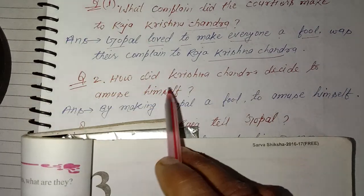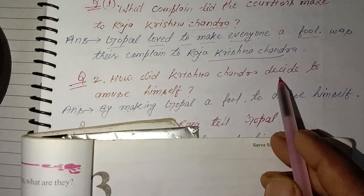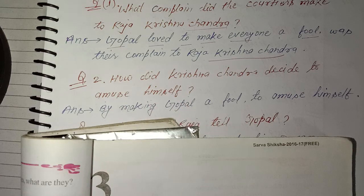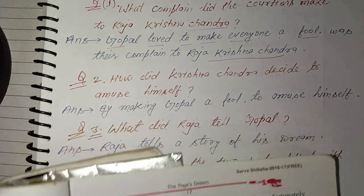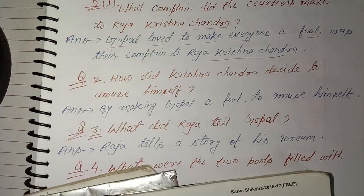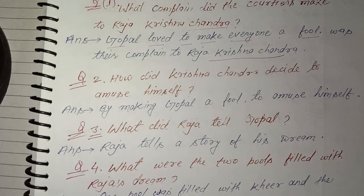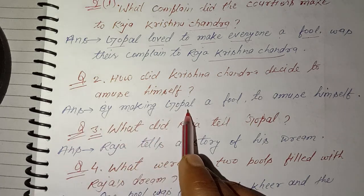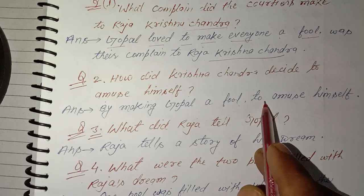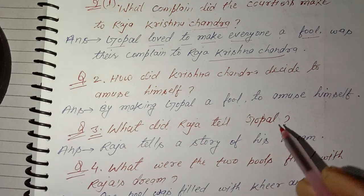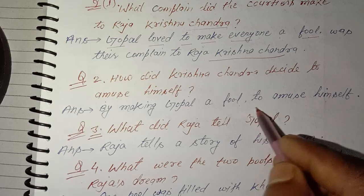Next question: How did Raja Krishna Chandra decide to amuse himself? The answer is: by making Gopal a fool to amuse himself. Gopal ko murkh bana karke unki badla liya gaya — he took revenge by making Gopal the fool.